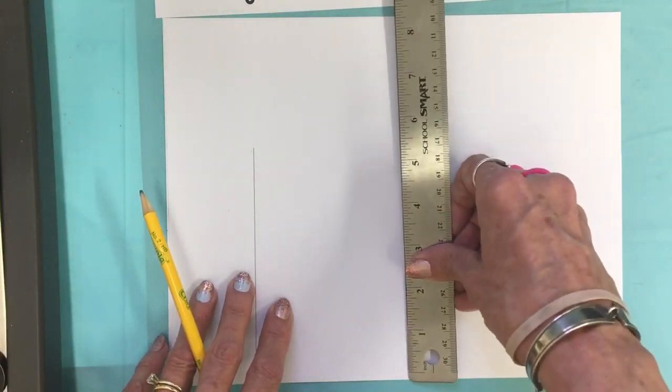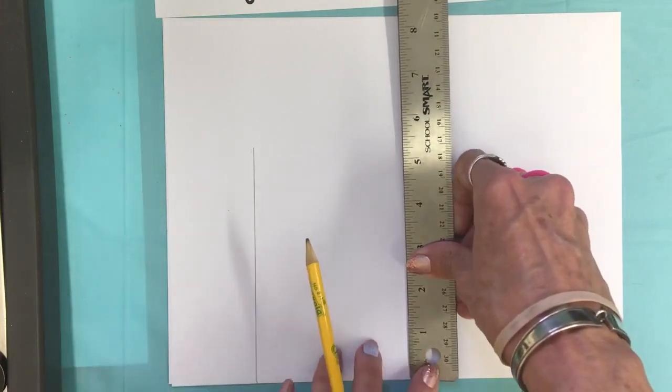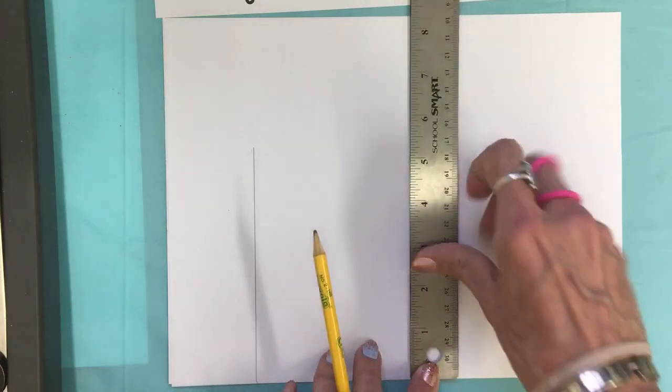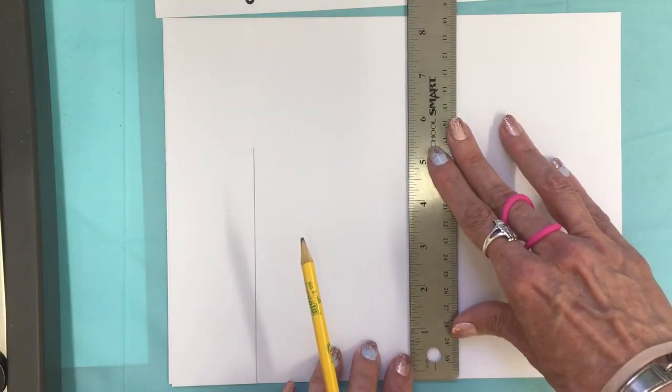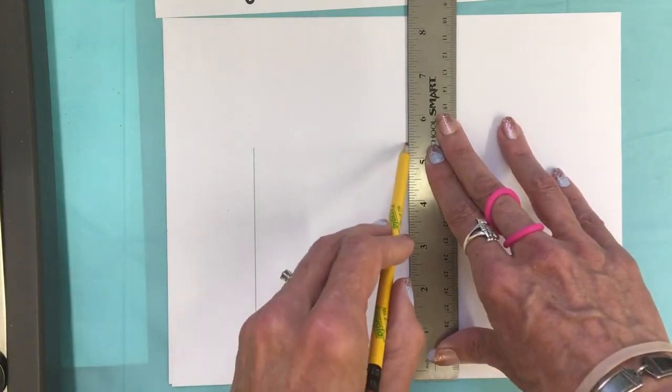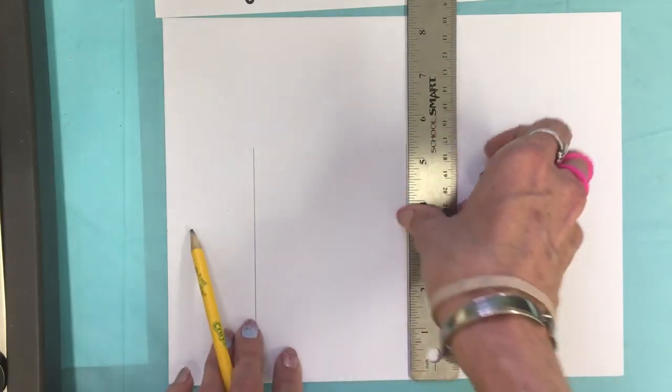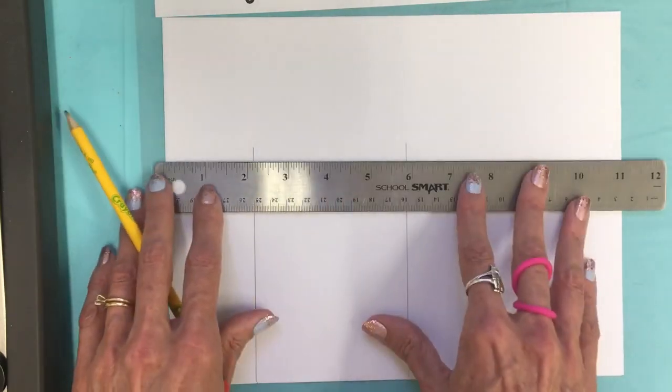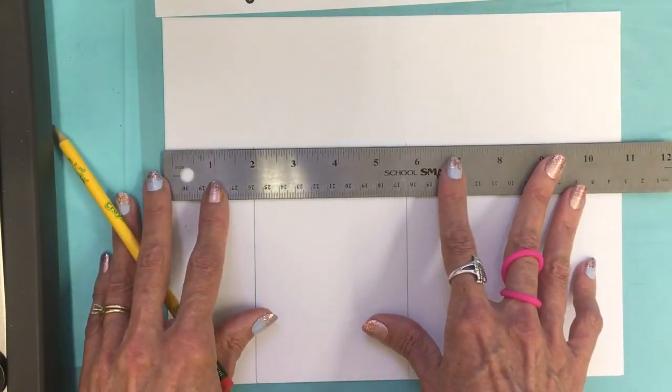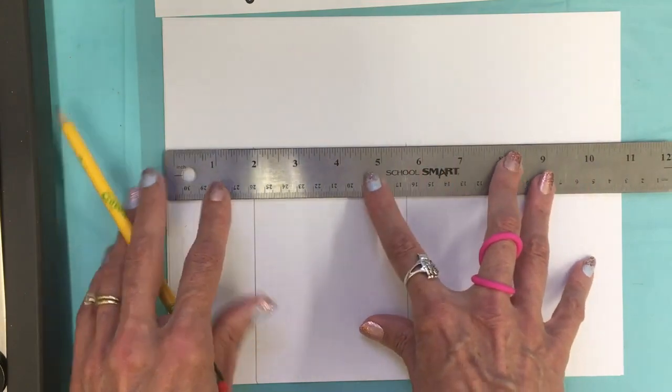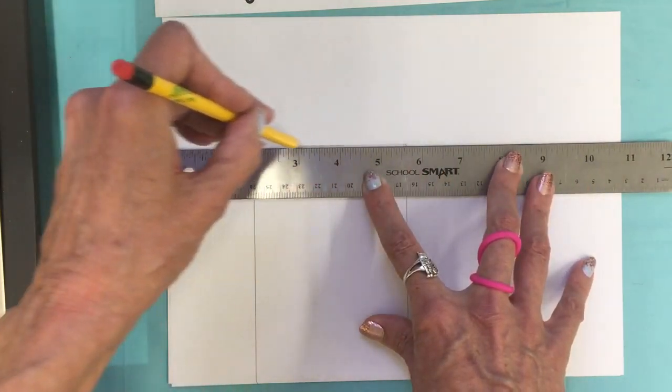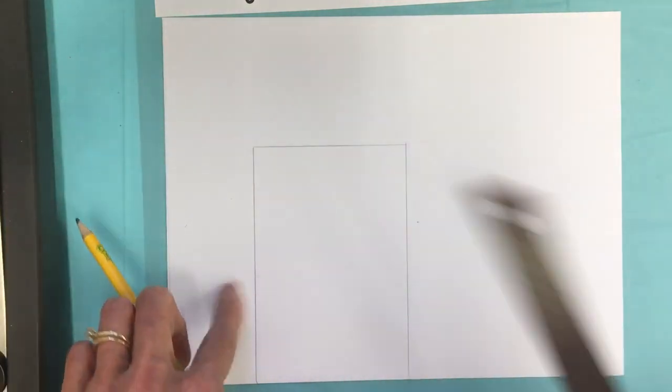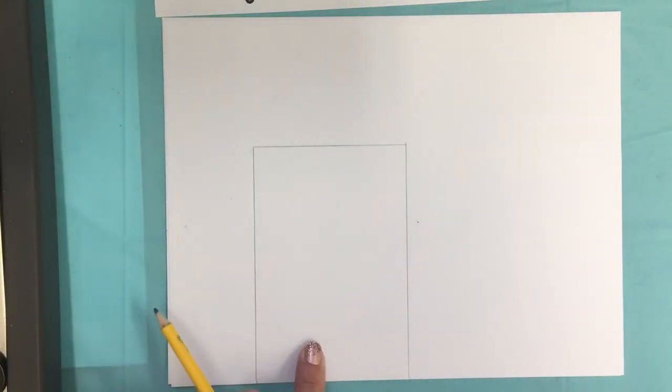So again I'm going to line up my paper and the bottom of the ruler so that I know that line is as straight as I can get it. I don't want it slanted. And then again I can line my ruler up so that I know it goes straight across, and there I have one rectangle that starts to break up my page.